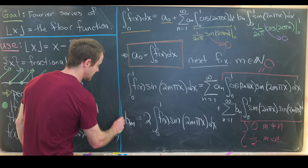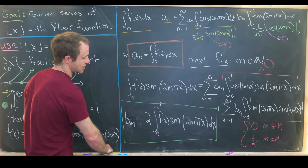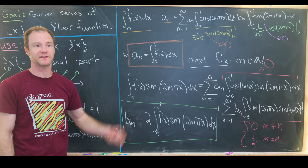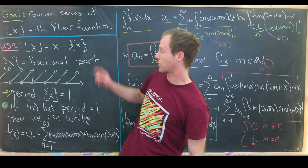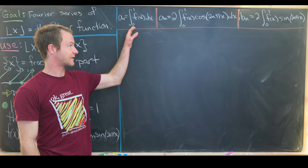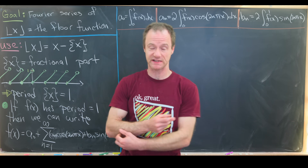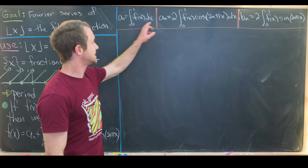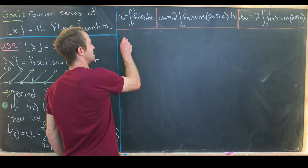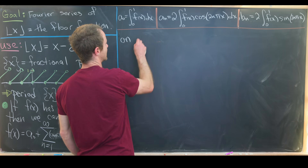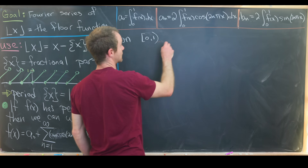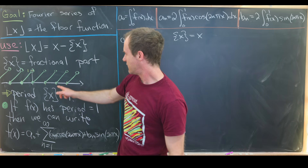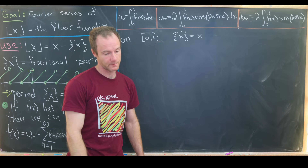We now have nice expressions for a₀ and the general b coefficient, and you get something similar for the general a coefficient. After collecting these formulas, we're ready to apply them to our fractional part function. The key observation is that on the interval [0, 1), the fractional part of x is simply equal to x.